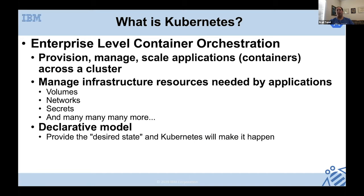Google had a lot of expertise with what we call orchestration — provisioning, managing, and scaling container-based applications across a cluster. After some convincing, Google donated Kubernetes to the Cloud Native Computing Foundation. Putting something in a foundation gives you open governance and a level playing field, with multiple vendors willing to contribute. This helped Kubernetes grow and become the de facto standard for container orchestration.